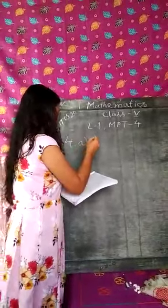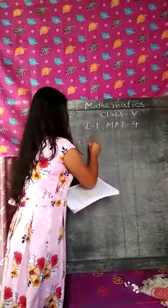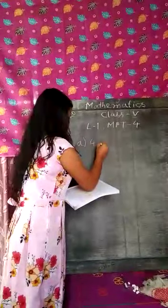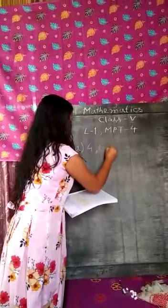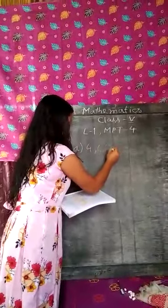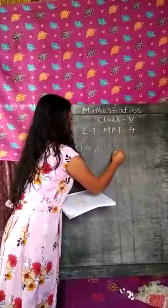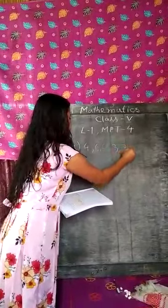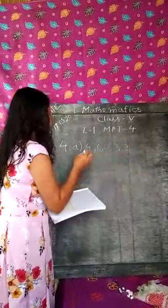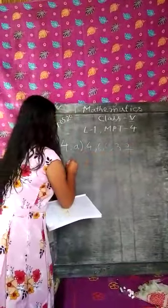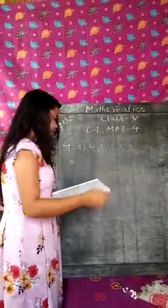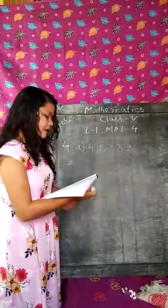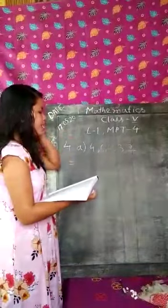The 5 digits are 4, 6, 0, 3, 2. We should make the smallest 7 digit number here.